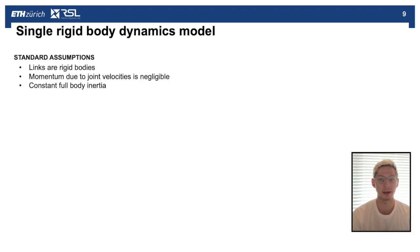This single rigid body dynamics model that we use with TOWR has the following assumptions. First, the links are rigid bodies, the momentum due to joint velocities is negligible, and there's a constant full body inertia, so the full body inertia doesn't change at all as the robot is moving and deviating from its nominal stance.